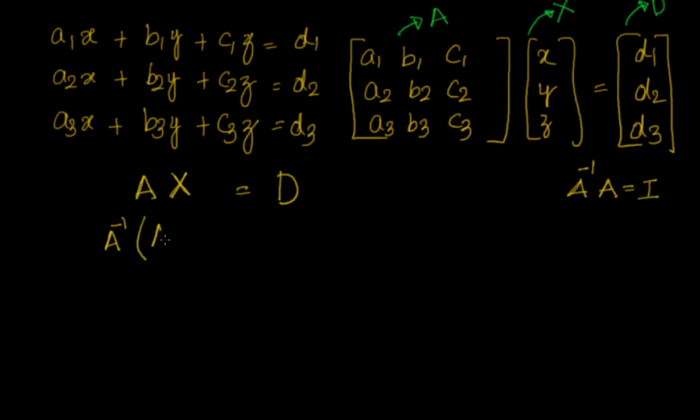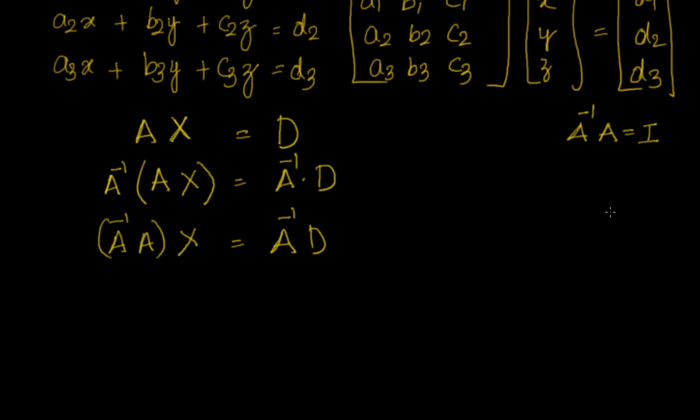I will say A inverse of AX equal to A inverse into D. Now this is nothing but A inverse into A. Can I say X equal to A inverse into D? Now you can see A inverse into A is nothing but equal to I. So IX equal to A inverse into D, that is nothing but equal to X equal to A inverse into D.